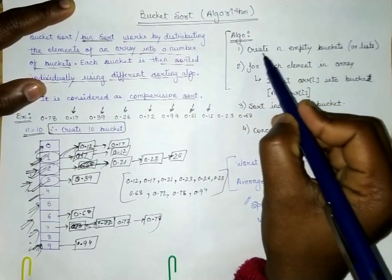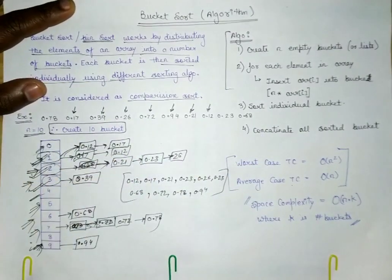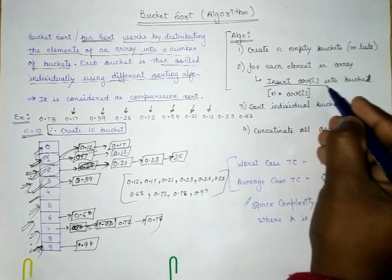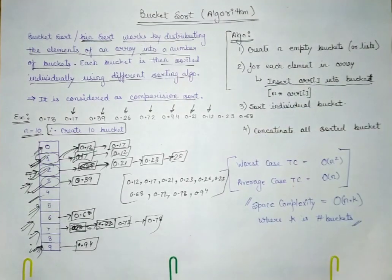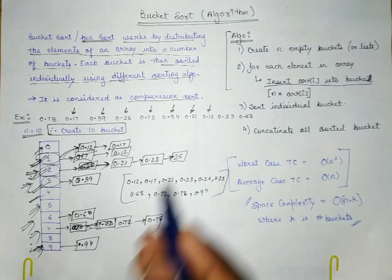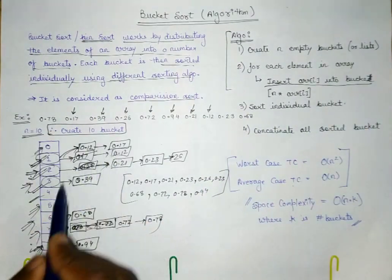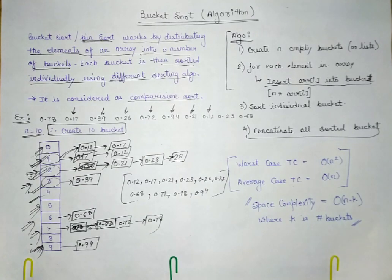To summarize the algorithm: first, create empty buckets equal to the number of elements — here 10 buckets. Second, for each element in the array, insert it into the bucket by multiplying it by the number of elements. Third, sort each individual bucket. Fourth, concatenate all the sorted buckets to produce the final sorted output.